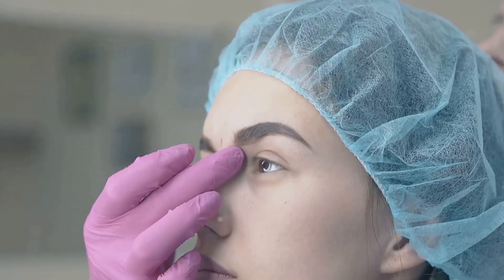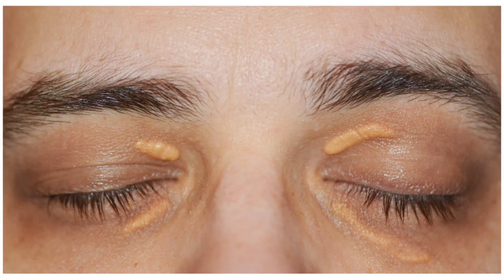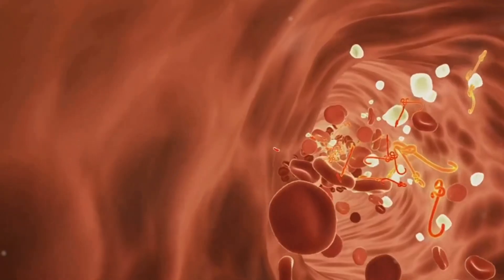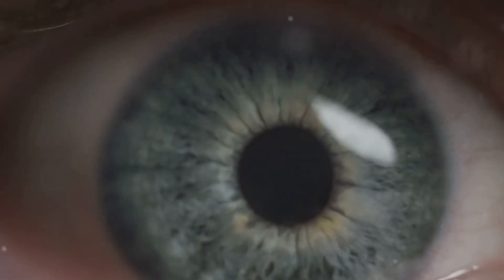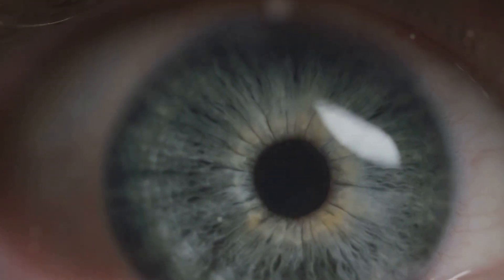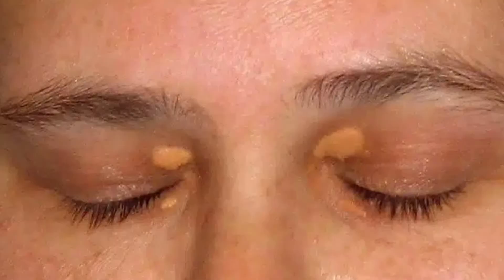Imagine tiny deposits of cholesterol, like little yellow beads gathering just beneath your skin. That's essentially what xanthalasma is. These deposits are made up of fatty substances, primarily cholesterol. Now, cholesterol isn't all bad. Your body needs it for essential functions. But when you have too much cholesterol circulating in your bloodstream, it can start to accumulate in unwanted places, like under your eyelids, forming xanthalasma.